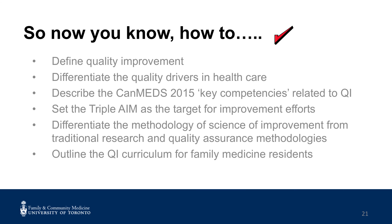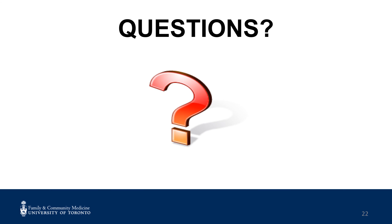So now you know how to define quality improvement, differentiate the quality drivers in healthcare, describe the CAN-MEDS 2015 key competencies related to QI, set the Triple Aim as the target for improvement efforts, differentiate the methodology of the science of improvement from traditional research and quality assurance methodologies, and outline the QI curriculum for family medicine residents. Your faculty supervisor will be happy to answer any questions you may have.